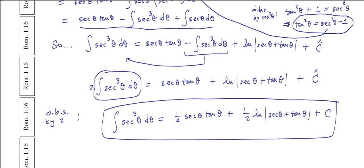So the integral of secant cubed theta d theta is equal to one half secant theta times tangent theta, plus one half the natural log of the absolute value of secant theta plus tangent of theta, plus a constant of integration. See you in the fourth video where we look to integrate secant to the fourth power.